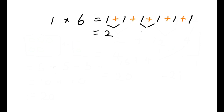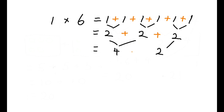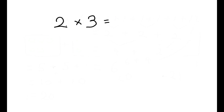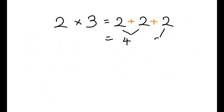1 times 6 is 1 plus 1 plus 1 plus 1 plus 1 plus 1, which equals to 2 plus 2 plus 2, which equals to 4 plus 2. The answer is 6. 2 times 3 means adding 2, 3 times to 0, so there are three 2s, and sum them up: 2 plus 2 plus 2, which equals to 4 plus 2. The answer is 6.